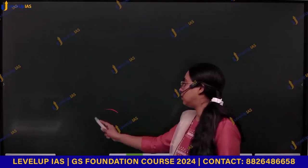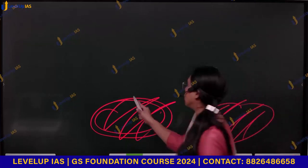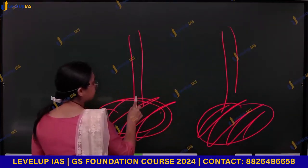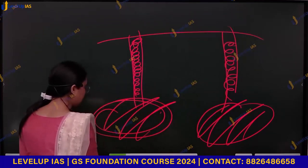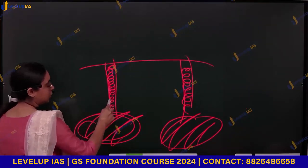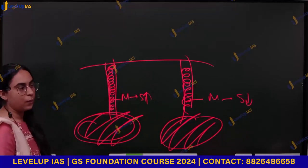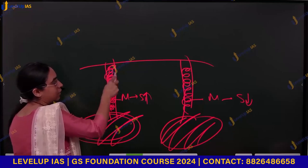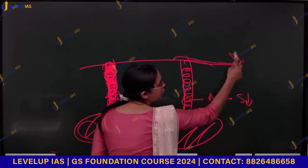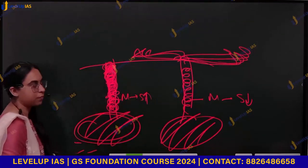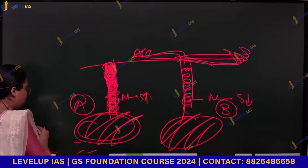Suppose we have two magma chambers. From each chamber, you have a conduit or pipe through which magma comes up to the surface. Magma chamber A has more silica — it is very sticky and viscous. Magma chamber B has less silica — it is more flowing in nature. Which magma do you think will form volcanic peaks, and which will form plateaus?